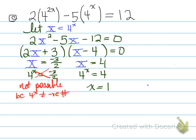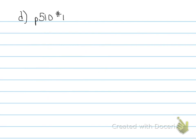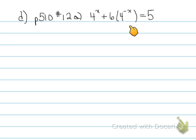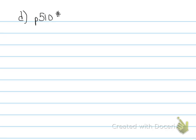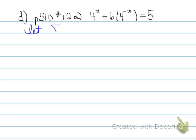Let's look at a more complicated case from page 510, number 12a: 4^x plus 6 times 4^(−x) equals 5. Instead of letting u equal 4^x, we notice there's a negative exponent. So we let u equal the smallest possible power, which is 4^(−x) — the same strategy as before, choosing the smallest power.